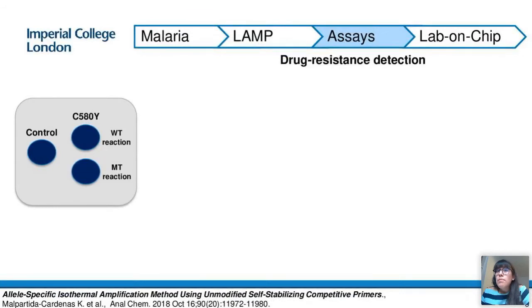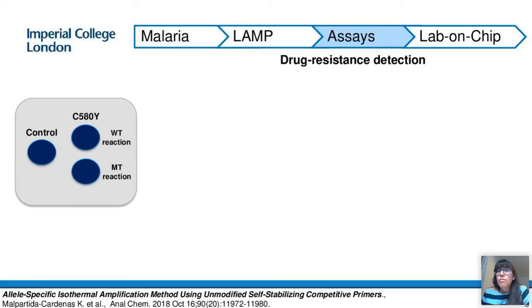Based on LAMP, we have developed a modified version which targets the detection of mutations and therefore can discriminate samples containing only a single base change. This method has been applied for the detection of drug-resistant parasites causing malaria. As shown in the diagram, we have three reaction wells containing the same input sample: a reaction targeting a human gene to verify successful nucleic acid extraction (the control well, which should always be positive), a reaction targeting the wild-type allele to detect parasites that will be affected by the drug, and a reaction targeting the mutant allele to detect parasites that could be resistant to the drug.